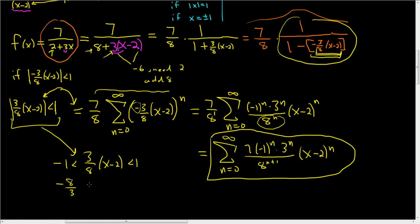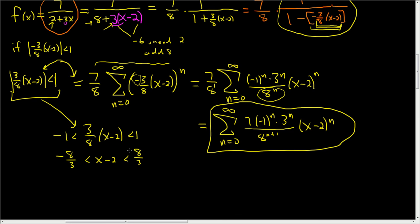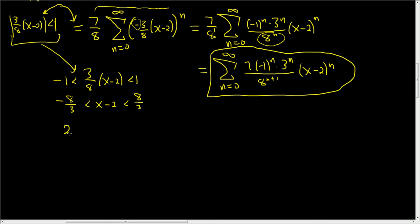So we get 8 thirds. And then we just have to add 2 to every side. So when you add 2 to every side, you get 2 minus 8 thirds, less than x, less than 8 thirds plus 2. Think of 2 as 6 thirds. So this is 6 thirds minus 8 thirds, less than x, less than 8 thirds plus 6 thirds. 6 minus 8 is negative 2 thirds, less than x, less than 14 thirds.